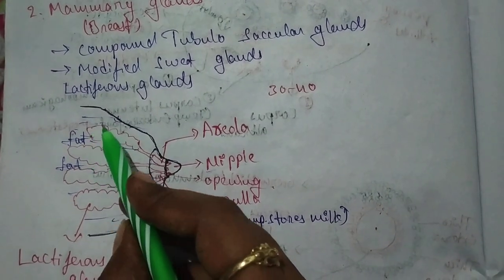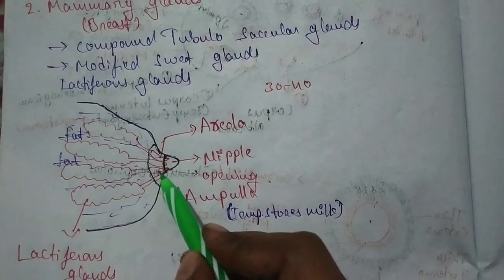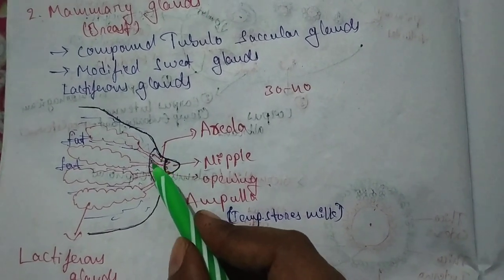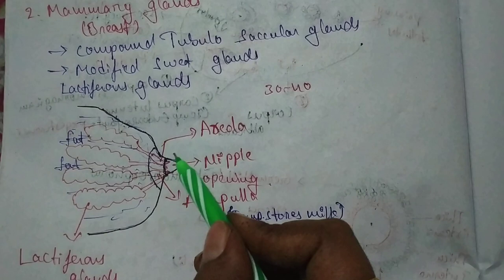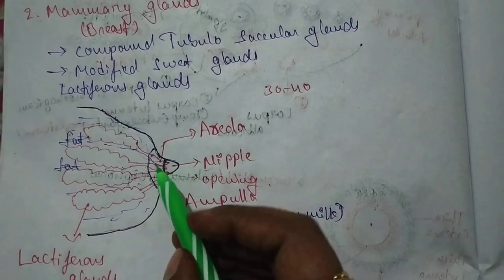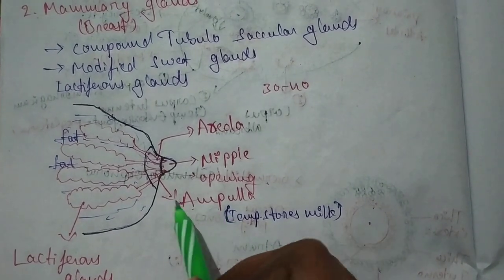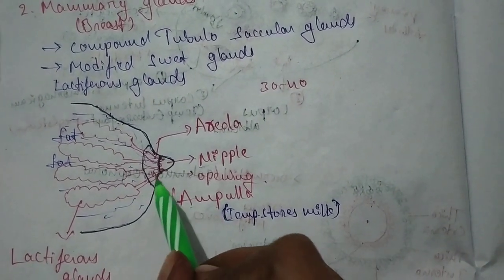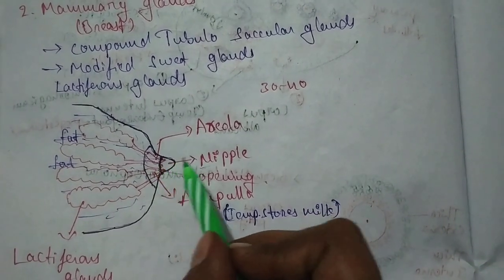These are the lactiferous glands. The ampulla is a swelling part that is helpful for the storage of milk. It is used to store the milk. These glands open to the nipples.